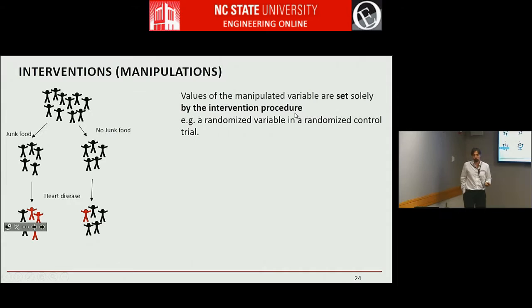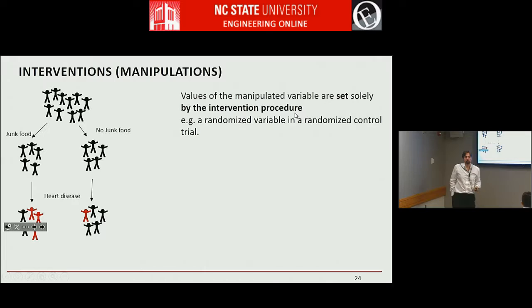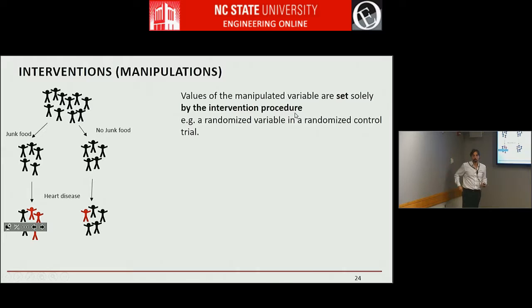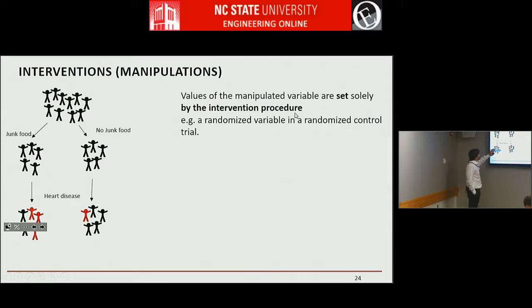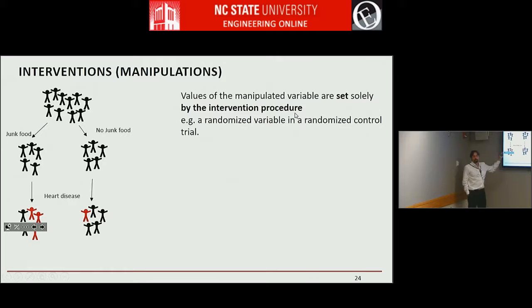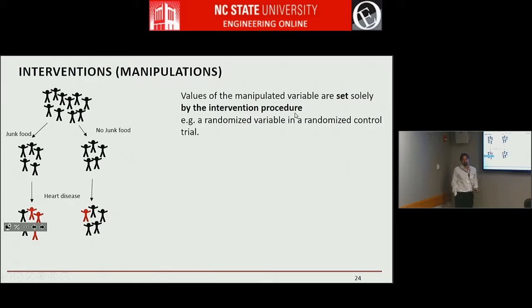Let me explain how we model interventions when you do an experiment. These are called clinical trials in medicine and A-B testing in business. For example, you do a study where the intervention is that you randomize — you take a set of people, randomize them to two groups, feed one with junk food and the other without. Then you measure the proportion of people who got heart disease. This is how they do interventions in medicine.